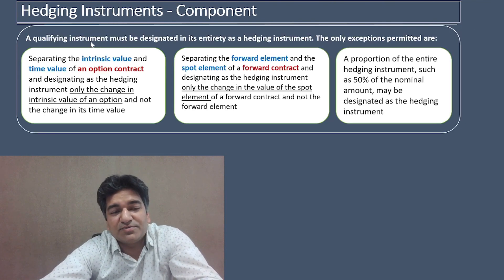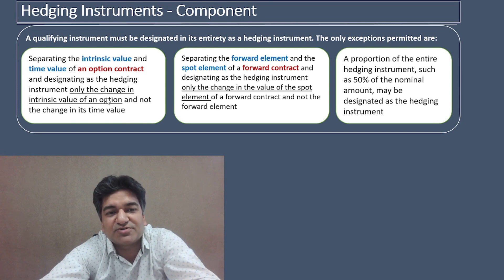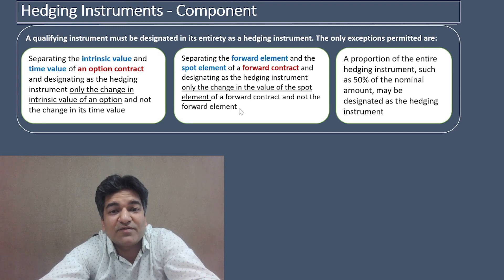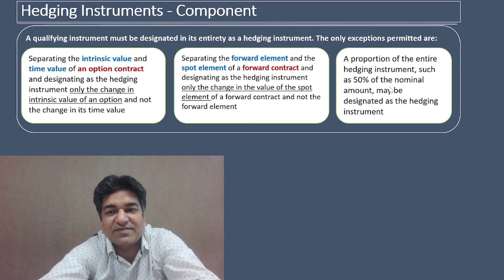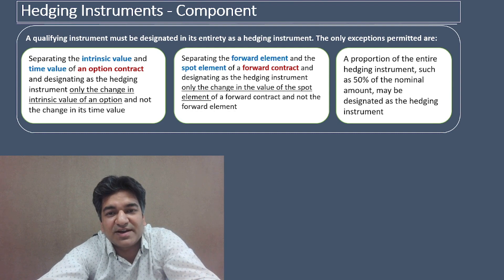There are three exceptions to the rule that a qualifying instrument must be designated in its entirety: first, separating the intrinsic value and time value of an option and designating only the change in intrinsic value as a hedging instrument; second, in the case of a forward contract, only the change in the value of the spot element can be designated as a hedging instrument and not the forward element; third, a proportion of the entire hedging instrument — such as 50% of the nominal amount — may be designated as a hedging instrument. In this video, we have discussed hedged items as well as hedging instruments. We will be uploading more videos on hedge accounting, so stay tuned.